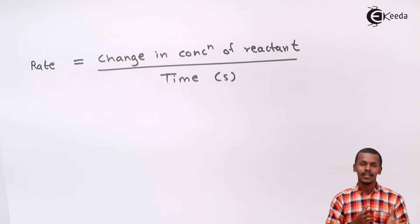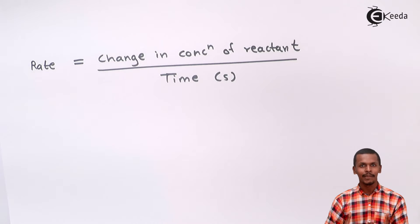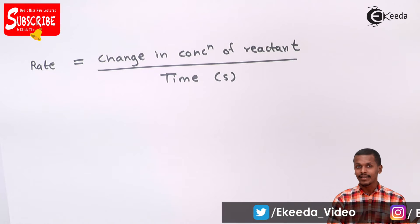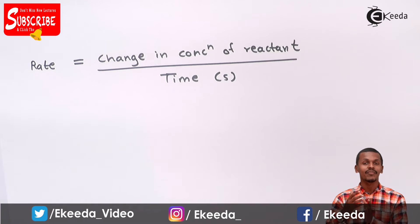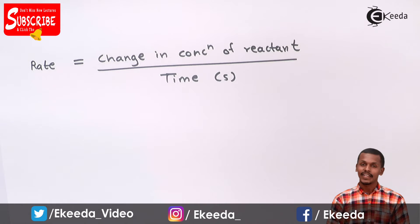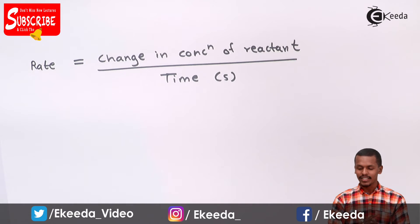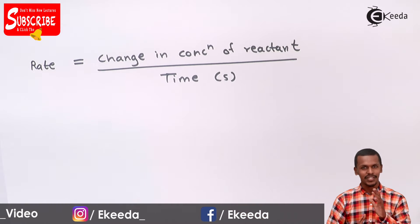The reason behind that is the concentration of the reactant goes on decreasing, so the initial concentration will be comparatively more than the final concentration of the reactant. When we take the difference between final and initial, we get a negative value — the magnitude will be positive but the sign will be negative for the change in concentration of the reactant.